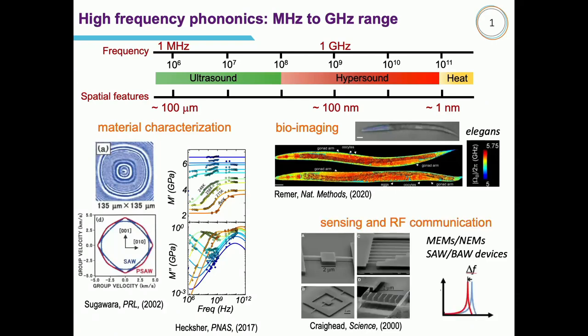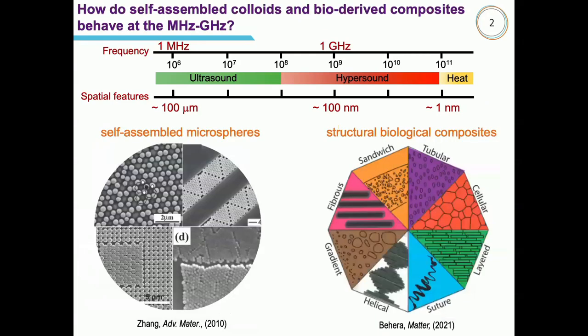Another application is designing devices that work in this range, mainly micro and nano electromechanical systems — microstate structures that resonate — which we can use for sensing or to build filters, SAW (surface acoustic wave) and bulk acoustic wave devices for communication and interaction with radio frequency waves, since we are in the same range of frequencies.